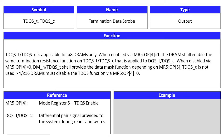Termination data strobe is an output signal. Its symbols are TDQST and TDQSC. TDQST and TDQSC are applicable for BI-8 DRAMs only. When enabled via Mode Register 5, TDQS enable, the DRAMs shall enable the same termination resistance function on TDQST and TDQSC that is applied to DQST and DQSC. When disabled via Mode Register 5, TDQS enable, DMN and TDQST shall provide the data mask function depending on Mode Register 5, DM enable. TDQSC is not used. BI-4 and BI-16 DRAMs must disable the TDQS function via Mode Register 5, TDQS enable.